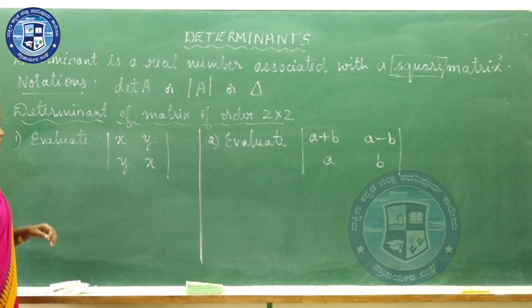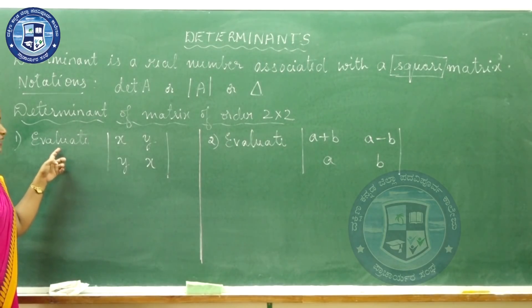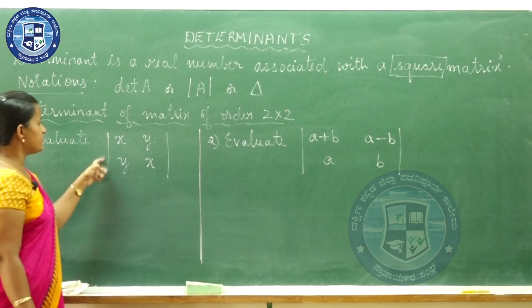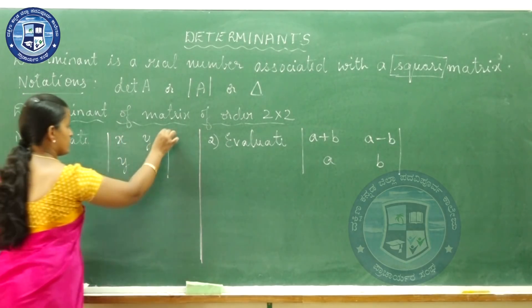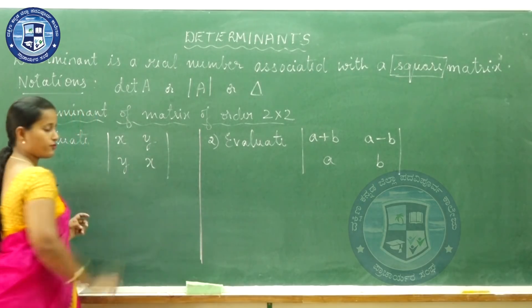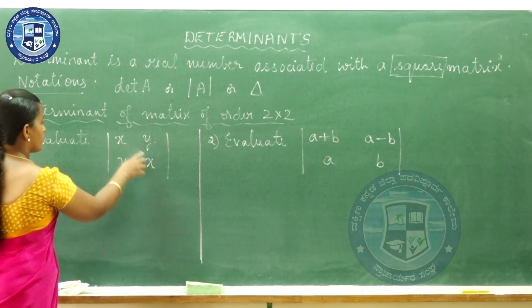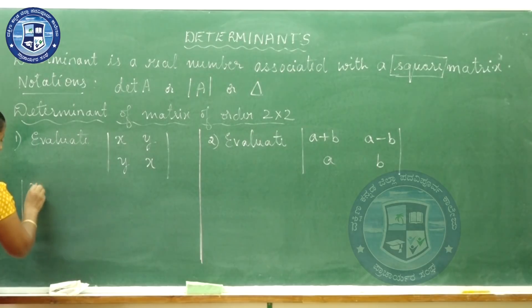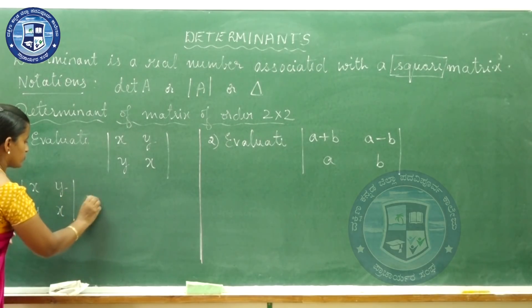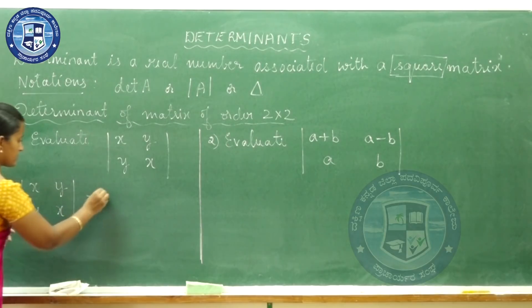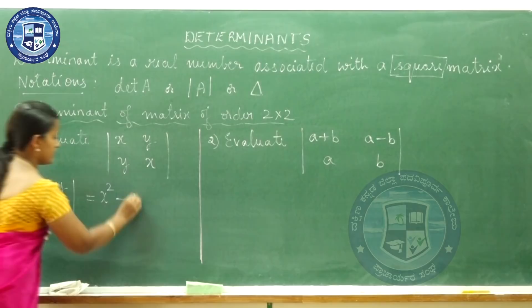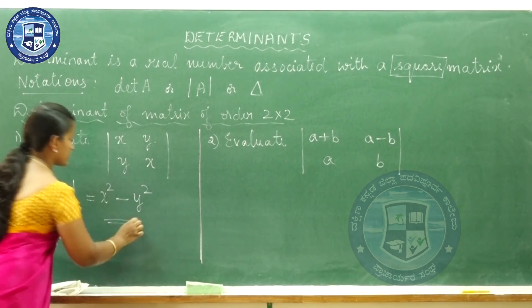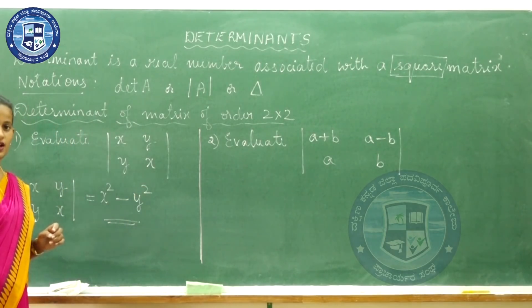Let us solve some problems. First: evaluate the determinant of [x, y; y, x]. These are two vertical lines, which means you have to find out the determinant. So x into x is x² minus y into y is y². So x² minus y² is the answer. Coming to the second question: evaluate the determinant of [a+b, a-b; a, b].